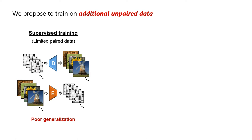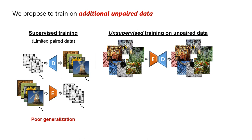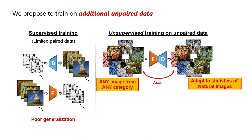The training configuration imposes that images return to themselves under transformation. This enables training on additional data of any unpaired images from arbitrary semantic classes — images for which we don't have an fMRI recording at all.